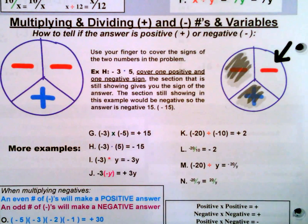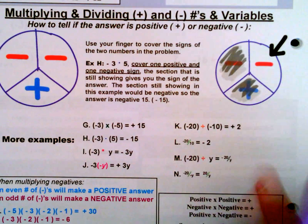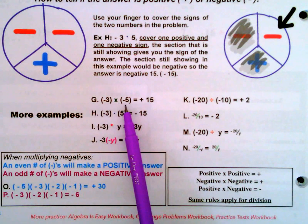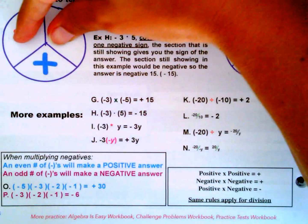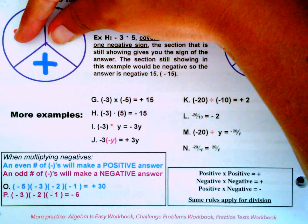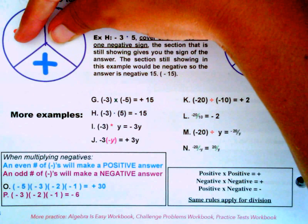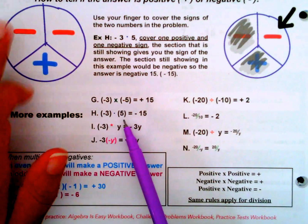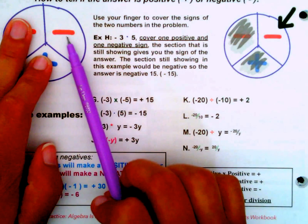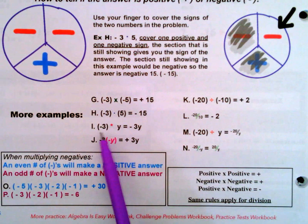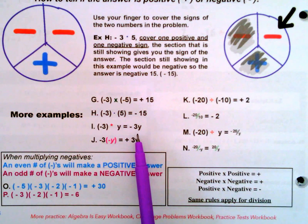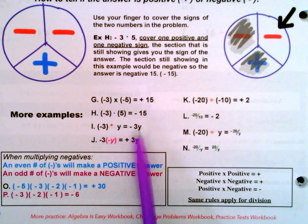Example G: negative 3 times negative 5. A negative times a negative gives a positive answer, so negative 3 times negative 5 equals positive 15. Quick review: negative 3 times positive 5 gives negative 15. And negative 3 times y is just negative 3y, just as 5 times a is 5a.